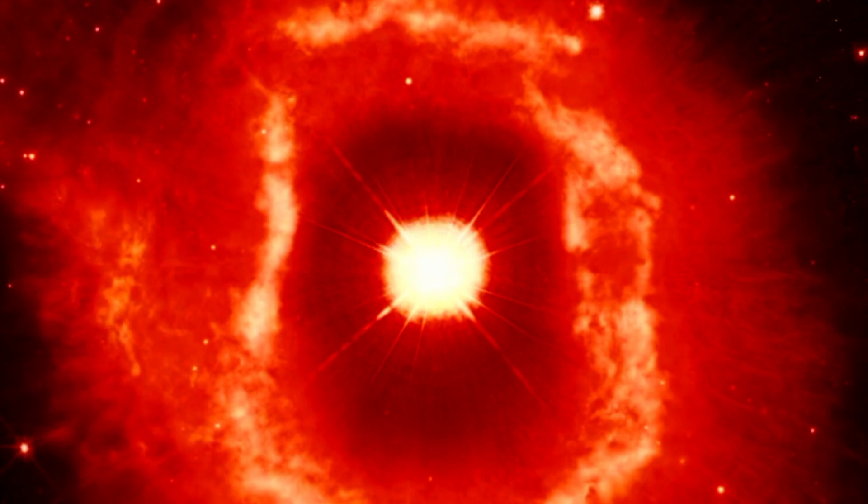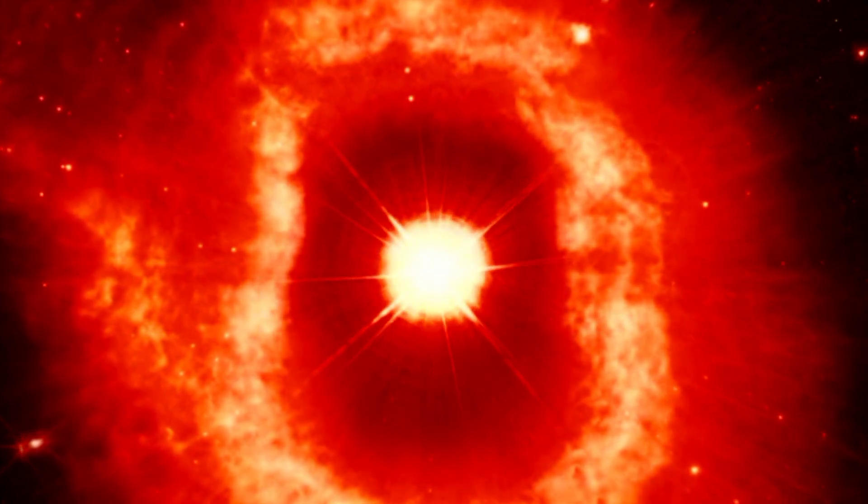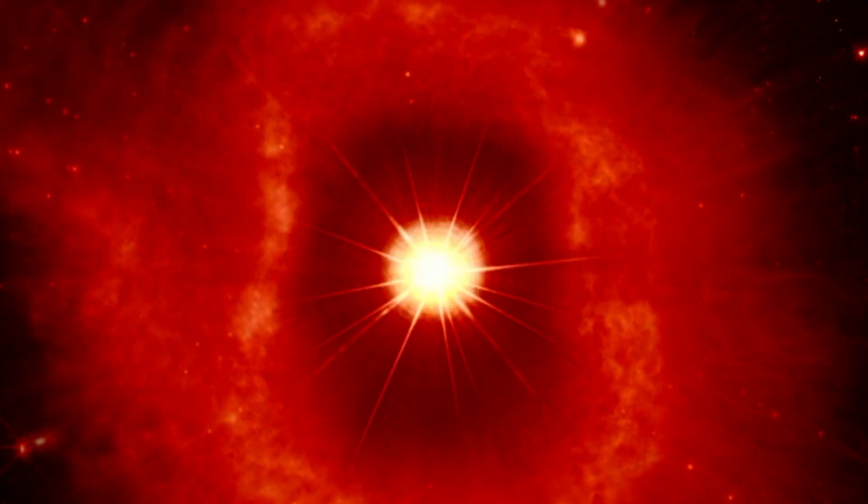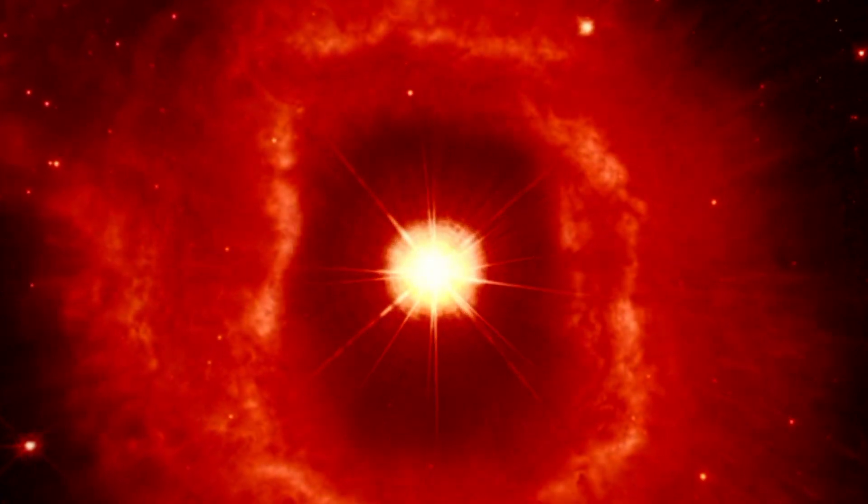VY Canis Majoris isn't just big, it's losing mass at an alarming rate. It sheds material into its stellar wind, forming a massive dust cloud around it, spanning more than 17 light years.